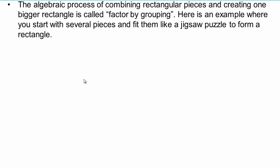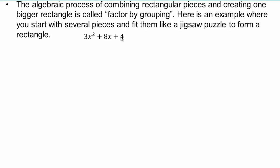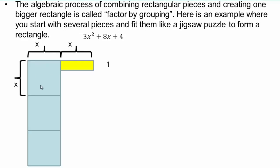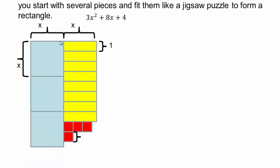The algebraic process of combining rectangular pieces and creating one bigger rectangle is called factor by grouping. Let's do examples of factor by grouping for different types of polynomials — we'll continue to explore trinomials of degree 2. Let's look at how we would visualize 3x squared plus 8x plus 4 geometrically. We have 3 x squared pieces, 8 rectangles of area x, and 4 little squares of area 1.